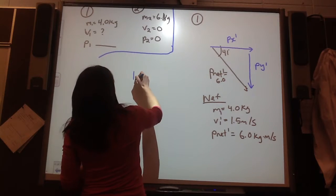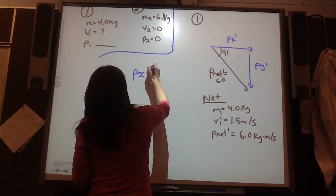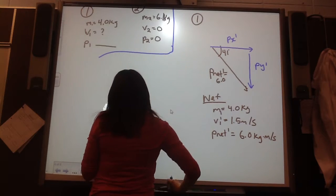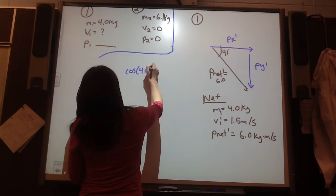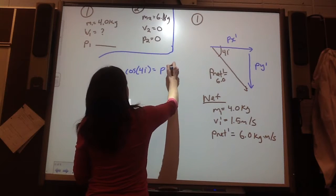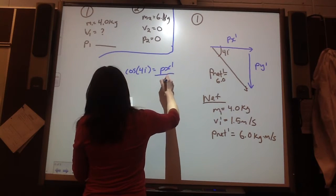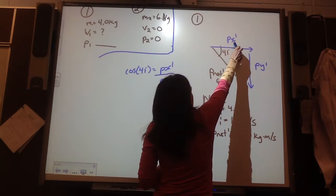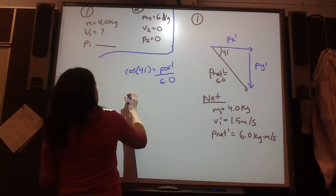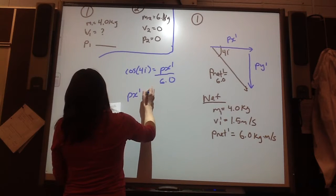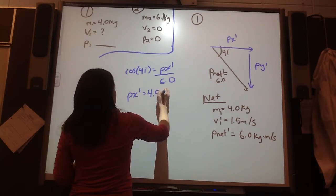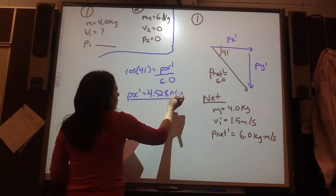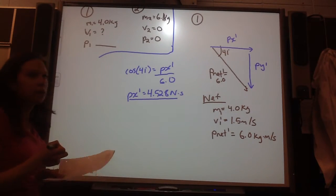So, my cos of 41 degrees is equal to Px prime divided by 6.0 because I have this is my adjacent over hypotenuse. So, Px prime is equal to 4.528. And I'm just going to put units in Newton seconds because it's just less work.